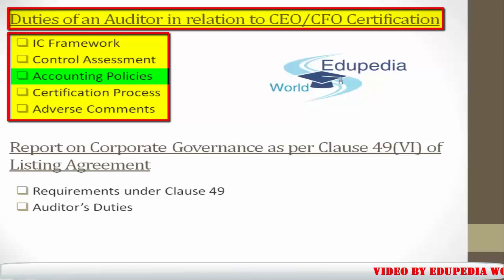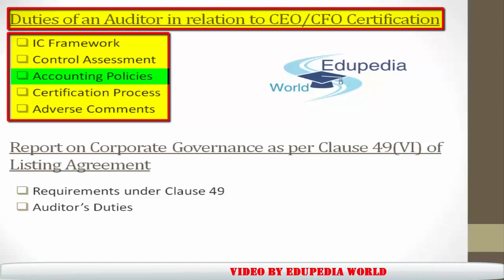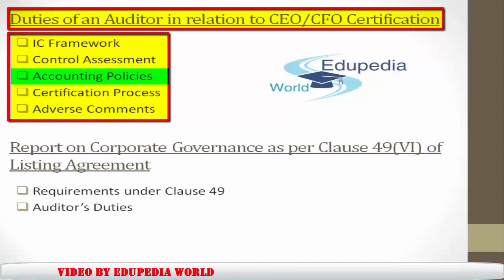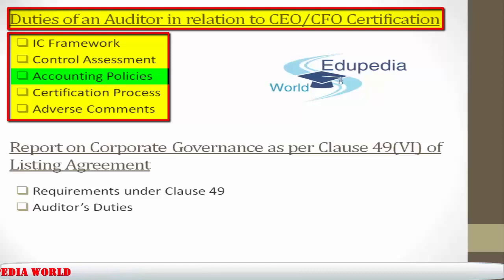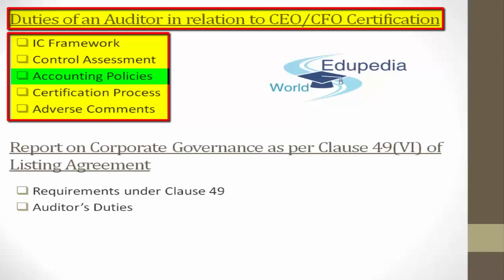Number three is accounting policies. As an auditor you should examine whether a process exists in the company whereby all significant changes in accounting policies and in the system of internal control are communicated to the audit committee and auditors. It is your responsibility to check whether such a process exists, and whether necessary significant changes need to be made.